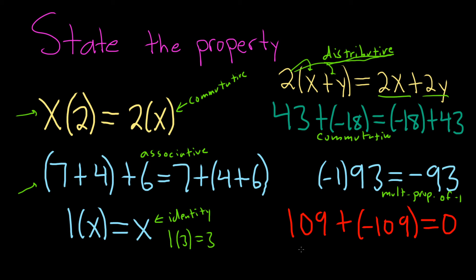And this one here, 109 plus negative 109 is a very special property. It's called the inverse property of addition. Formally, we would say that negative 109 is the additive inverse of 109. So if you take a number and you add the opposite, you get zero. It's basically saying if you have x plus negative x, you get zero. And you can go the other way by the commutative property as well - negative x plus x equals zero. That's called the inverse property for addition.